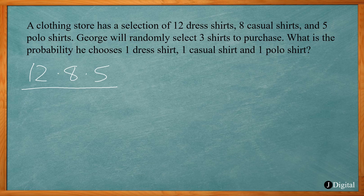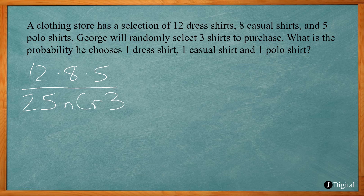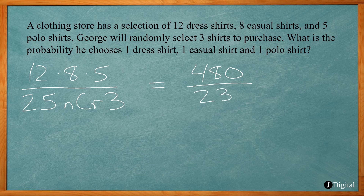The denominator is the total number of ways to choose any 3 shirts from all 25 available (12 + 8 + 5 = 25). That's a combination: 25 choose 3. Using the combination function on your calculator gives 2300. So the probability is 480 over 2300.